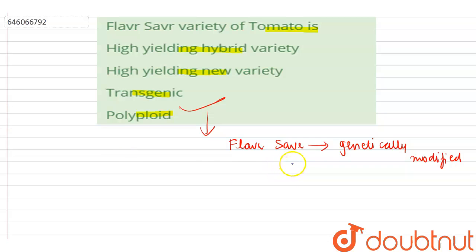It is a transgenic variety because in this, an antisense gene is inserted which interferes with the production of an enzyme.